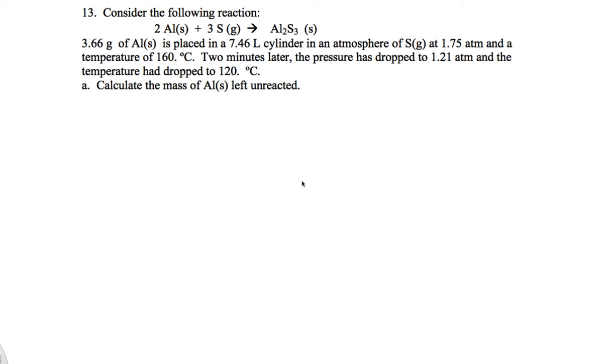Okay, so in this problem we have a reaction in which aluminum is reacted with sulfur. The important thing here is that sulfur is the gas, that's the only gas, and that produces aluminum sulfide.